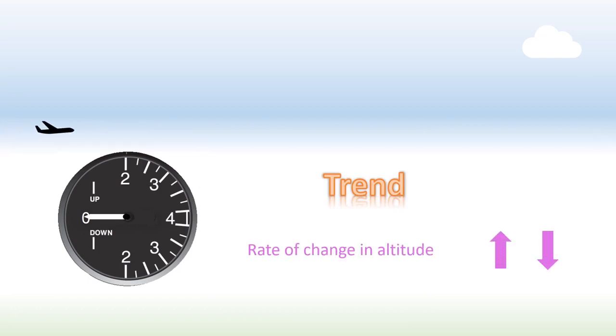For instance, imagine a rapid climb where the ambient pressure suddenly drops. In this scenario, the VSI needle shoots up, signaling a rapid increase in altitude. Later, during a more gradual climb, the needle moves slightly downward, but as long as the airplane continues to go up, the needle remains above zero, confirming the climb.